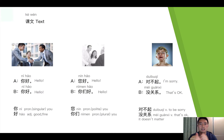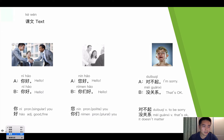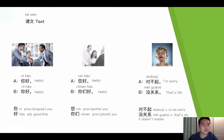First, let's take a look at some greetings. In the first conversation, we can see there is one person greeting another person. The first person is A, the second person is B.